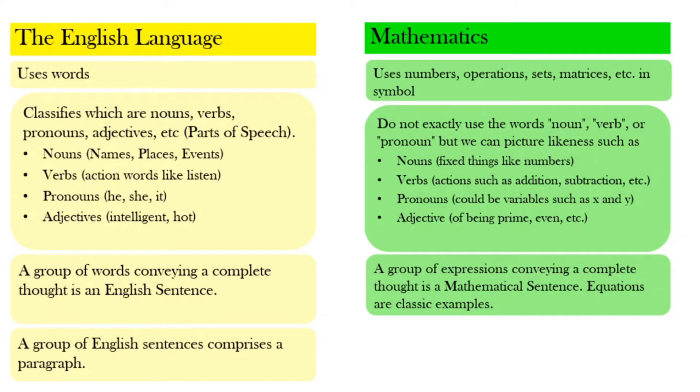If we group sentences, English sentences, then it would comprise a paragraph. In mathematics, if we group mathematical sentences like equations, they are called system of equations. We can indeed say that mathematics is a form of language. It's just different from the language that we know.